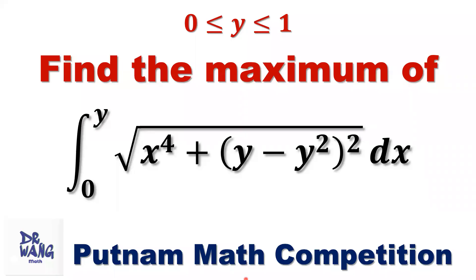Hello everyone, I'm Dr. Wang. Here is the question: if y is greater than or equal to 0 and less than or equal to 1, find the maximum of the integral from 0 to y² of √(x⁴ + y − y²)² with respect to x.